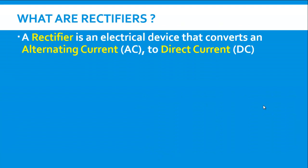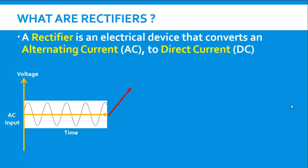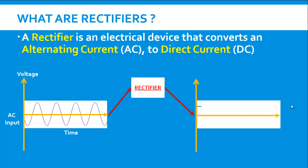What are rectifiers? A rectifier is an electrical device that converts an alternating or AC current to DC or direct current. Essentially what a rectifier does is it converts a sinusoidal waveform to a straight line.